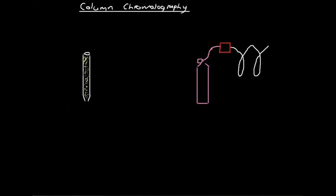We're going to have a look at column chromatography, which is a more general sort of category of chromatography than paper or thin layer chromatography. Under the heading of column chromatography, there are a few different types of chromatographic systems and processes. First of all, we're going to look at the general idea of column chromatography and the general criteria for a process to be referred to as column chromatography.